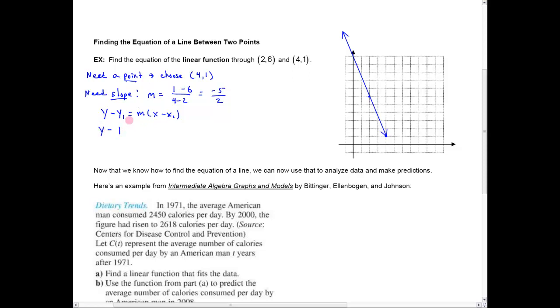y minus y₁ is m times x minus x₁. So, I've got y minus 1, I chose this point right here to be my y₁. That's going to equal my slope, negative 5 halves, times x minus x₁, which is 4. So I get y minus 1 is going to be negative 5 halves x. When I distribute over here, I'm going to get plus 20 halves, so that's plus 10. So, I'm going to get y equals negative 5 halves x plus 11. That would be my equation in slope intercept form.